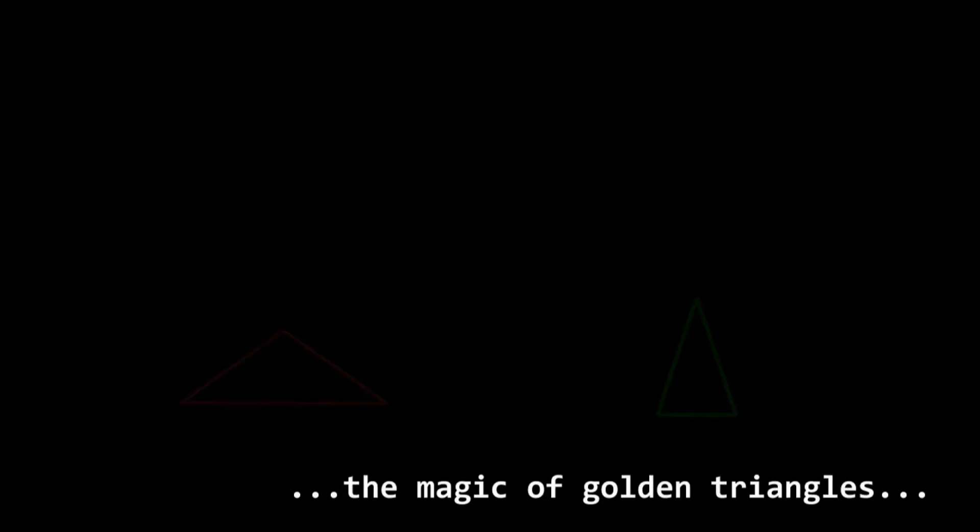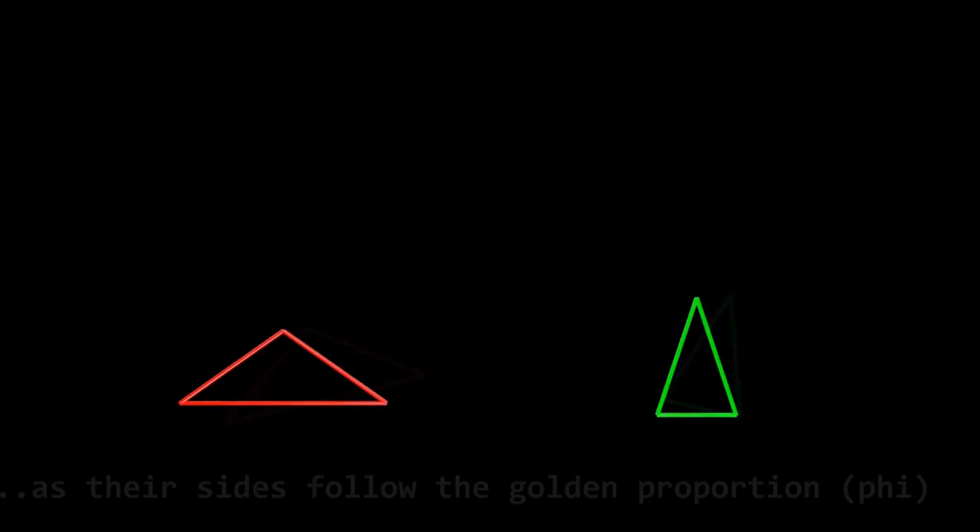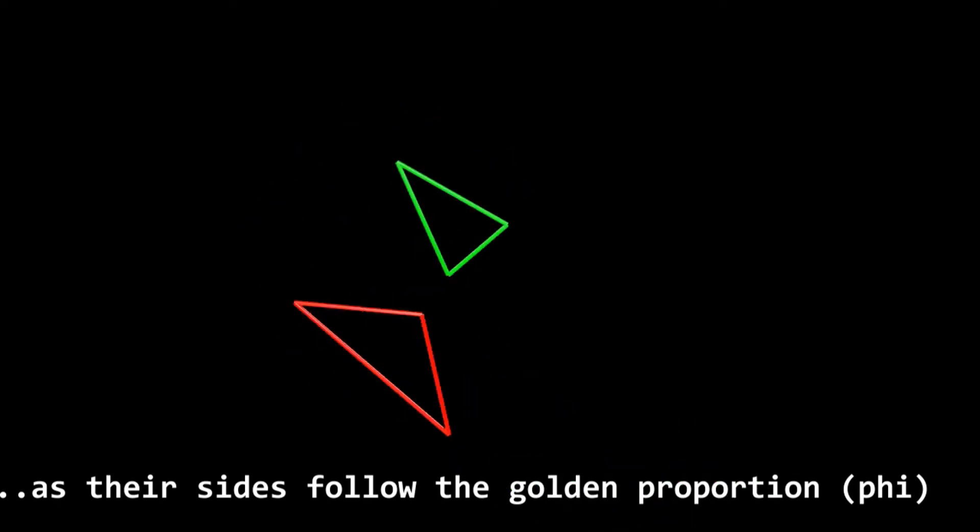In previous chapters, we discovered the magic of golden triangles, as their sides follow the golden proportion Phi.